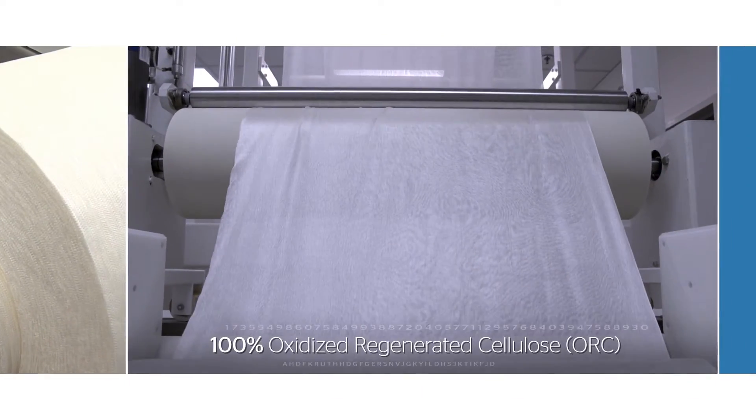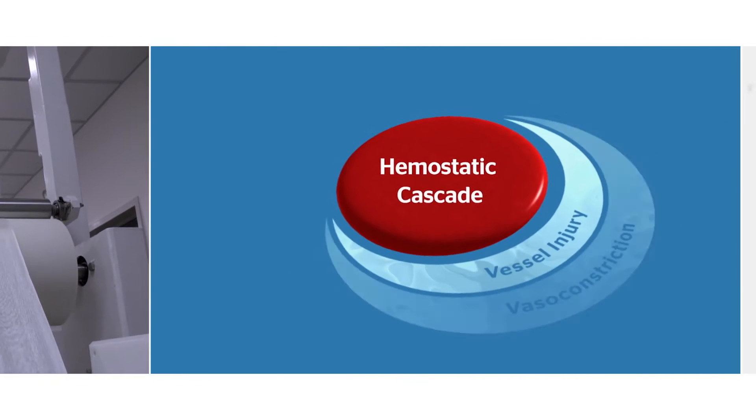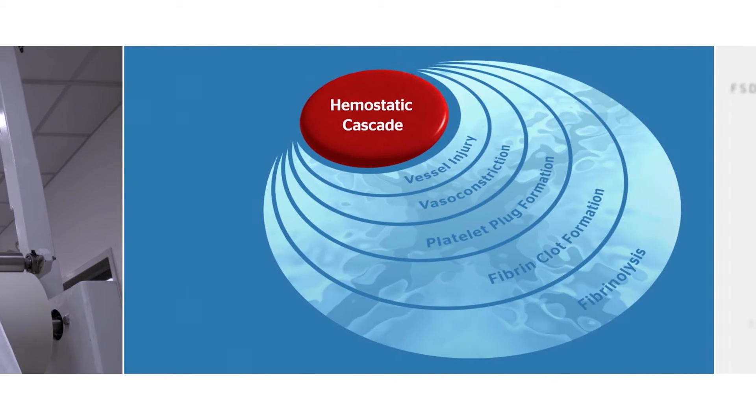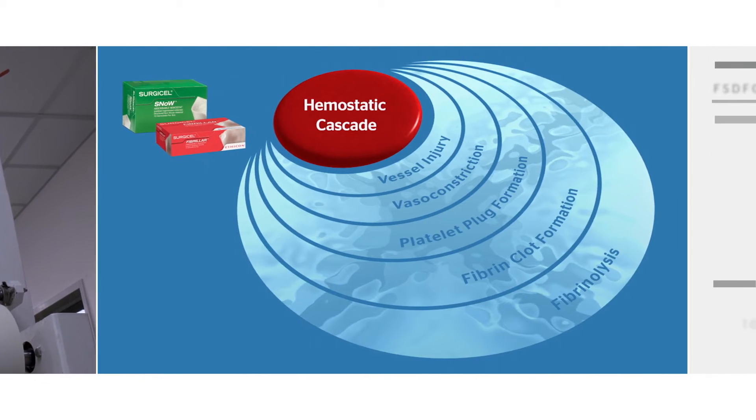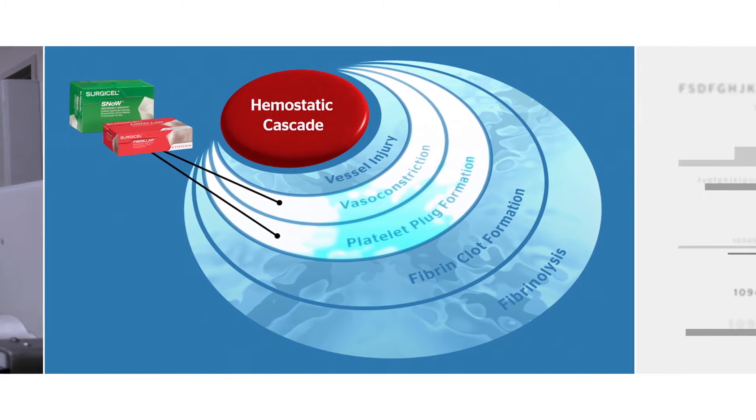That leads to the quality of the product. All Surgicel hemostats are 100% oxidized regenerated cellulose, a bioabsorbable material that acts as a physical barrier to bleeding while also helping initiate vasoconstriction and platelet plug formation.